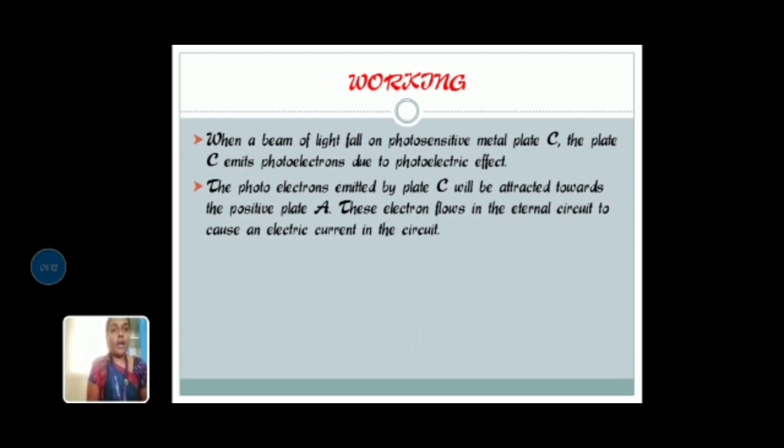Then, working of photoelectric effect. When a beam of light falls on photosensitive metal plate C which is the emitter, the plate C emits photoelectrons due to photoelectric effect. The photoelectrons emitted by plate C will be attracted towards the positive plate A. These electrons flow in the external circuit to cause an electric current in the whole circuit. Such a current is known as photoelectric current and measured by the microammeter connected in the circuit.